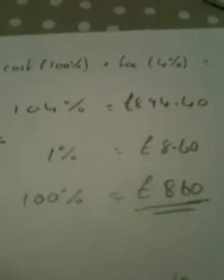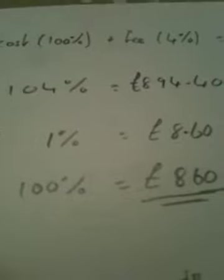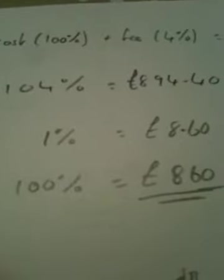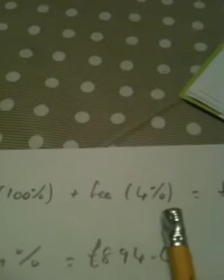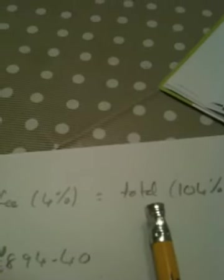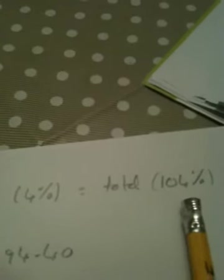Question 7 is a reverse percentage question. It gives the price of a holiday plus a booking fee. We have the cost of the holiday, which I'm calling 100%, plus the fee, which is a 4% booking fee, so that's a total cost of 104%.